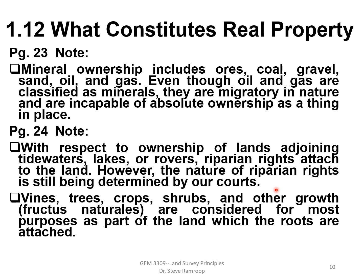With respect to ownership of lands adjoining tidewaters, lakes, or rivers, riparian rights attach to the land. However, the nature of riparian rights is still being determined by the courts. Trees, crops, shrubs, and other growth are considered for most purposes as part of the land to which the roots are attached. If there are any issues between property owners regarding natural vegetation, these will have to be legally defended.